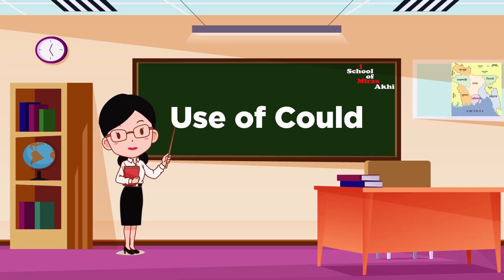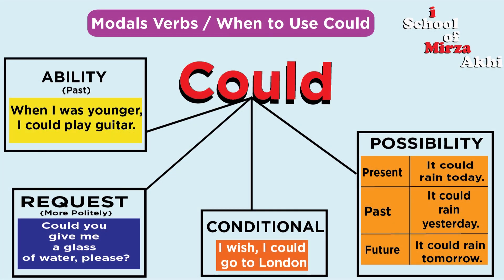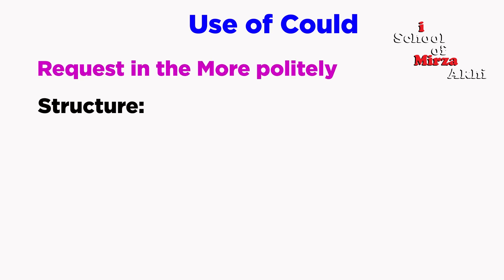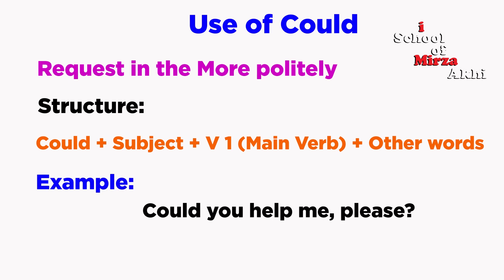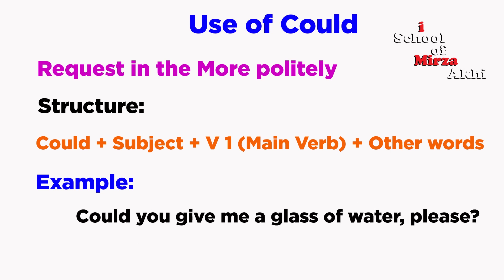Use of Could. Could is used to make a request more politely. Structure: Could plus subject plus V1 plus other words. For example: Could you help me, please? Could you give me a glass of water, please?